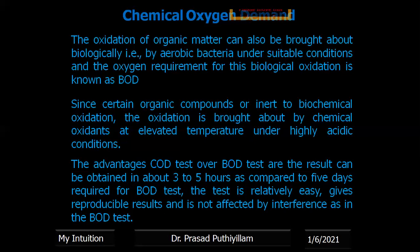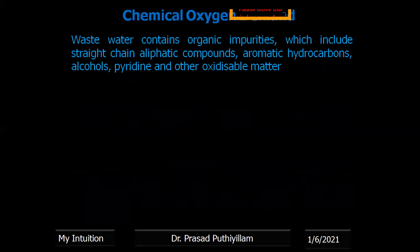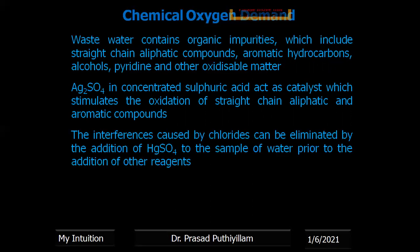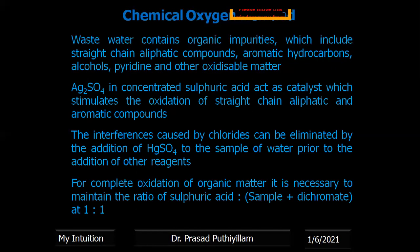The wastewater contains mainly organic impurities such as aliphatic compounds, aromatic hydrocarbons, alcohols, pyridine, and other oxidizable matter. If the water contains straight-chain aliphatic or aromatic compounds, potassium dichromate alone cannot oxidize them — it requires a catalyst, so silver sulfate is used. If the water contains chlorides, they may interfere with the reaction and can be eliminated by adding mercuric sulfate (HgSO4) before adding any other reagent. For complete oxidation, the acid-to-sample-dichromate ratio must be maintained at one to one — equal volumes of water sample dichromate mixture and sulfuric acid.